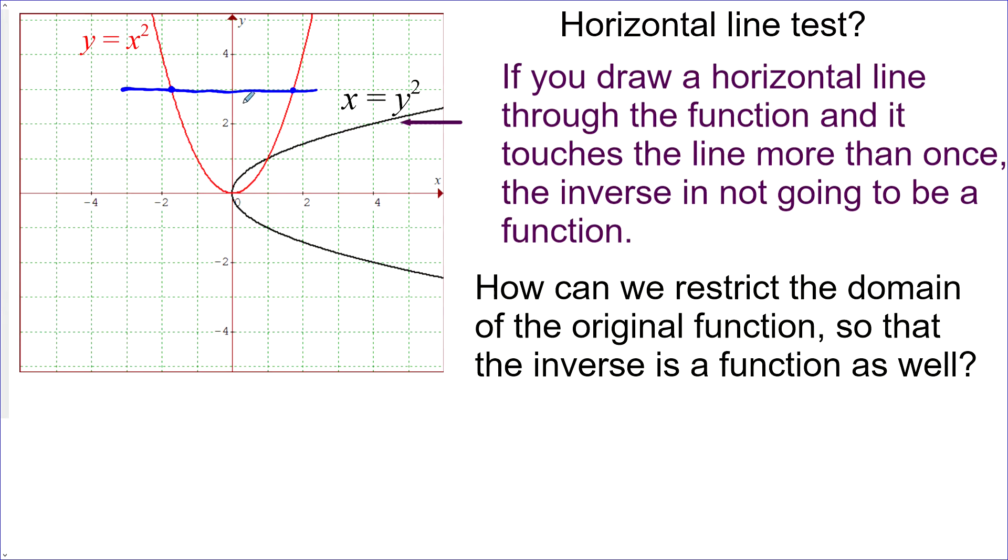Now if you just look at this horizontal line, if we took the inverse of this horizontal line, it would reflect in the line y equals x, and it would become a vertical line. So essentially, a horizontal line test on the original is like a vertical line test on the inverse. But we can do it without actually finding the inverse.